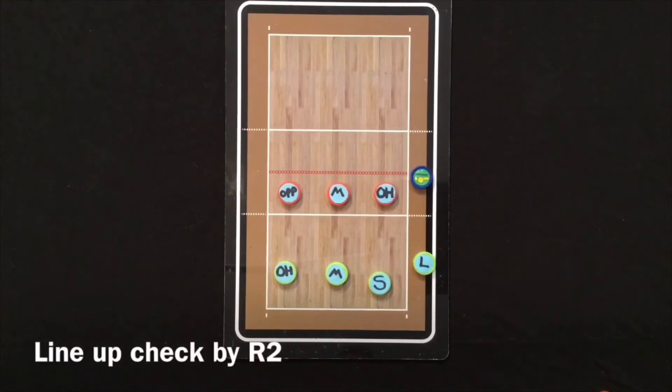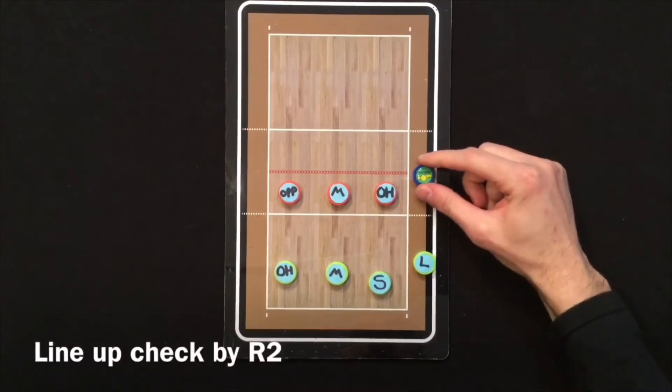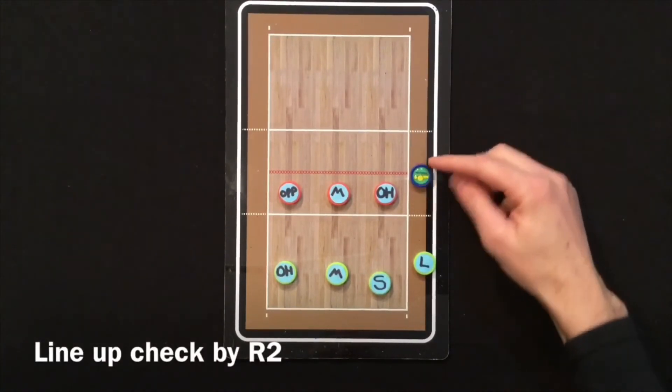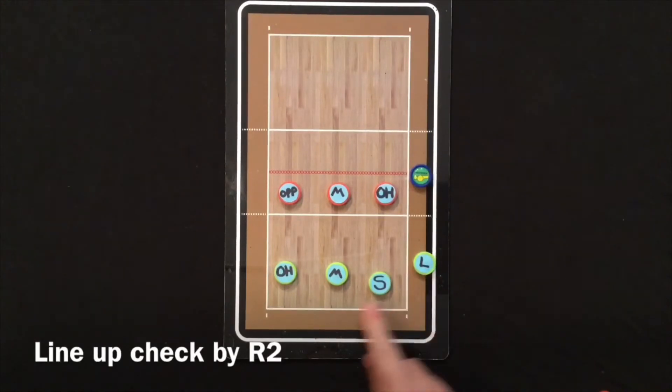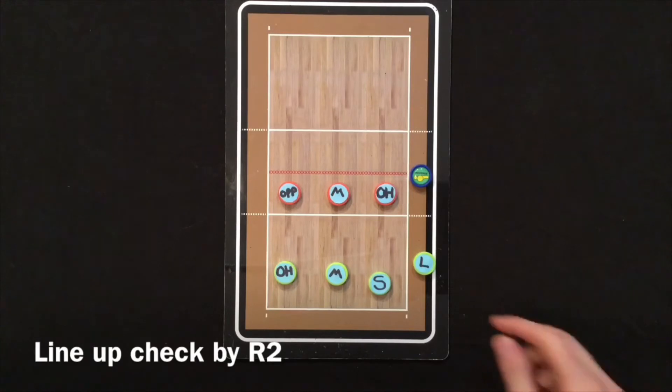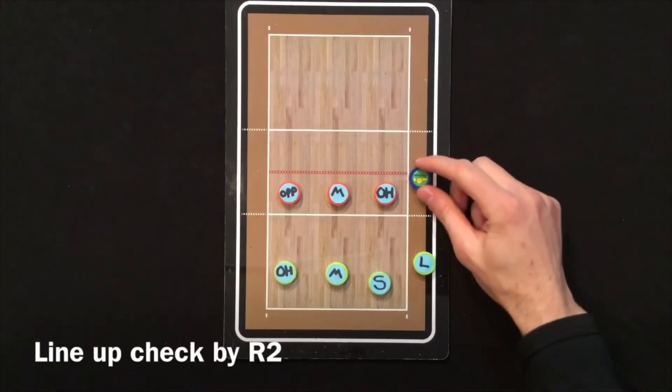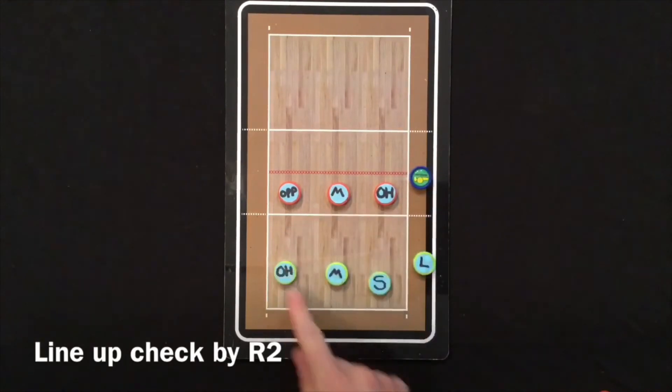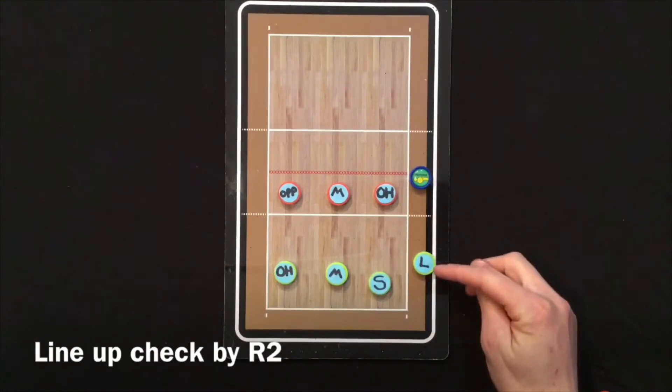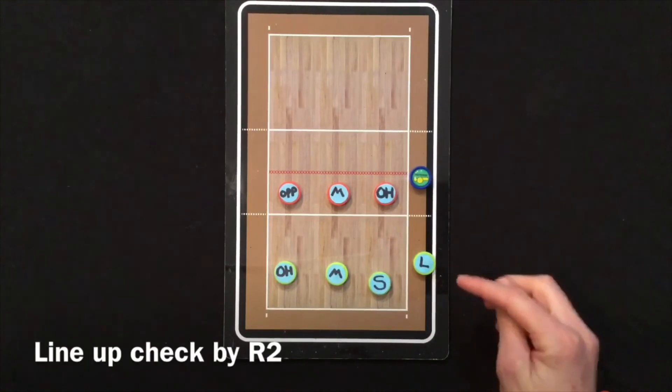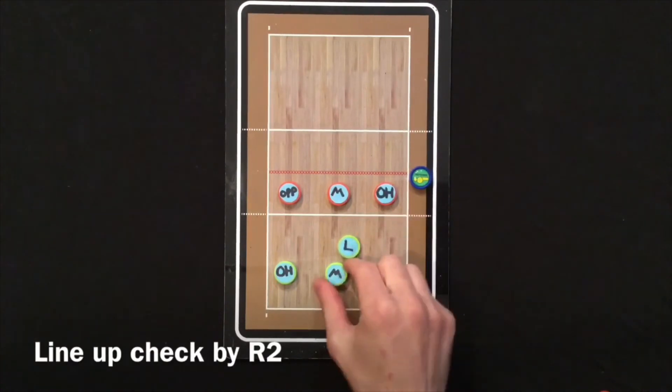Before the match can start, the down referee or the R2 needs to check the lineups and the libero cannot be on the floor during this check. So what needs to happen is the referee checks all the numbers of each player and then normally signals the libero that they are ready to go in and that switch can take place.